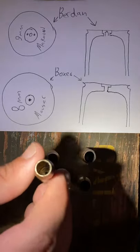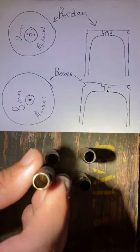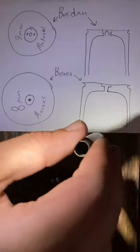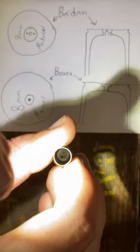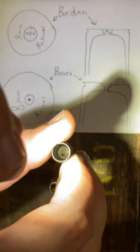Boxer Primed Ammo, however, will have one flash hole in the center of the round. Now, sometimes with Berdan Primed Ammo there will be just one hole like this one right here. This is the only round I've encountered like this, but it's still off to the side as you can see.